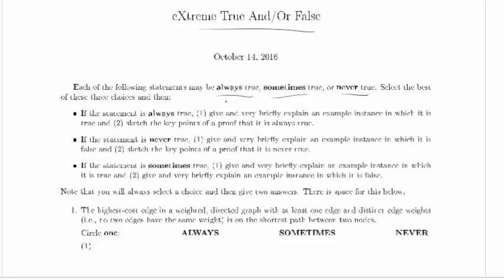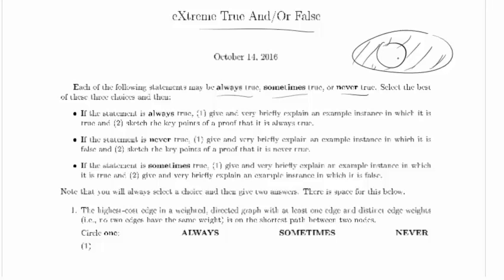We're dealing with statements about problem spaces. In a problem space — if this is our space — one thing that can happen is there may be some subset for which a statement is true, and for the rest of it the statement is false, making the statement sometimes true. We want to distinguish between the case where the whole space is shaded, the whole thing is clear, or there are portions that are shaded and portions that are clear.